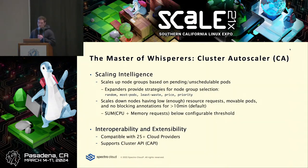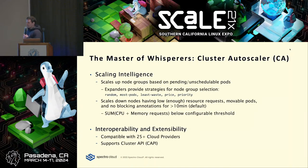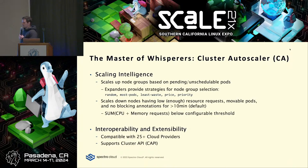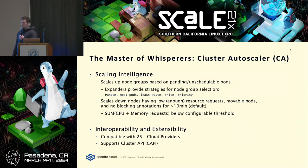How exactly does Cluster Autoscaler do what it does? For scaling up, it has a concept of an expander with different strategies. If there are any pending or unschedulable pods, Cluster Autoscaler will try to add capacity to one of your node groups. The default is random. A node group isn't a Kubernetes-native concept — it's more meaningful with managed Kubernetes. In AWS it corresponds to an autoscaling group; in Google it's a managed instance group.